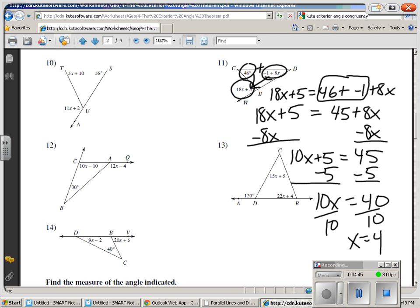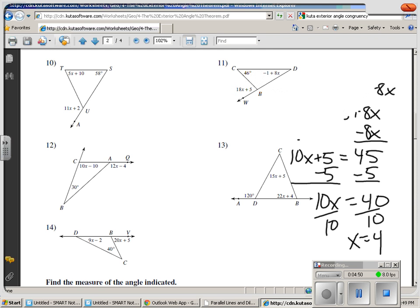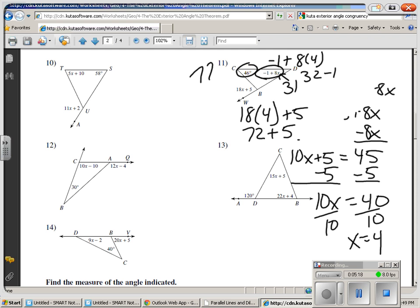And we can go ahead and plug that in and check our work. So let's go back up here. And we found x to be 4. So negative 1 plus 8 times 4. 8 times 4 is 32. And 32 minus 1 is going to give us 31 degrees. And 31 degrees plus 46 degrees equals 77 degrees. So you add those two, you get 77. So if I multiply 18 times 4 and add 5, I should get the same amount. 18 times 4 is 72. And 72 plus 5 is equal to 77. So we did that correctly.